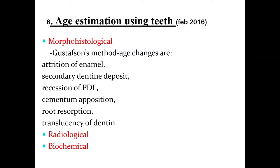Age estimation using teeth — morpho-histological: Gustafson's method estimates attrition of enamel, secondary dentin deposition, recession of the periodontal ligament, cementum apposition, tooth resorption, and dentin translucency. Radiological examination uses the panoramic Demirjian's method, and biochemical investigations are also used for age estimation from teeth.